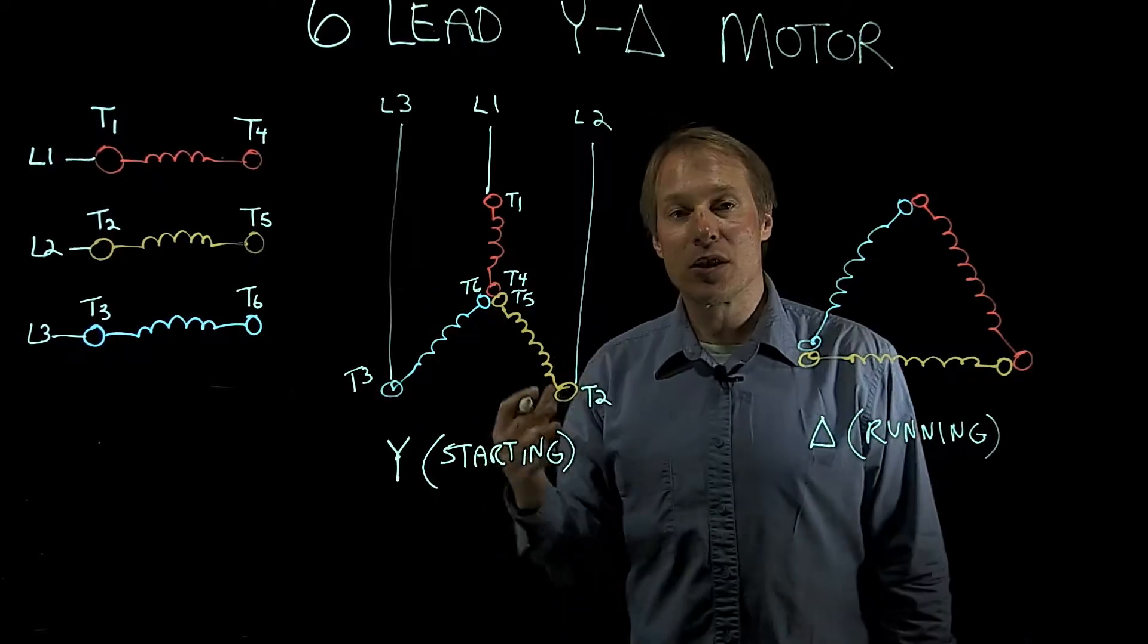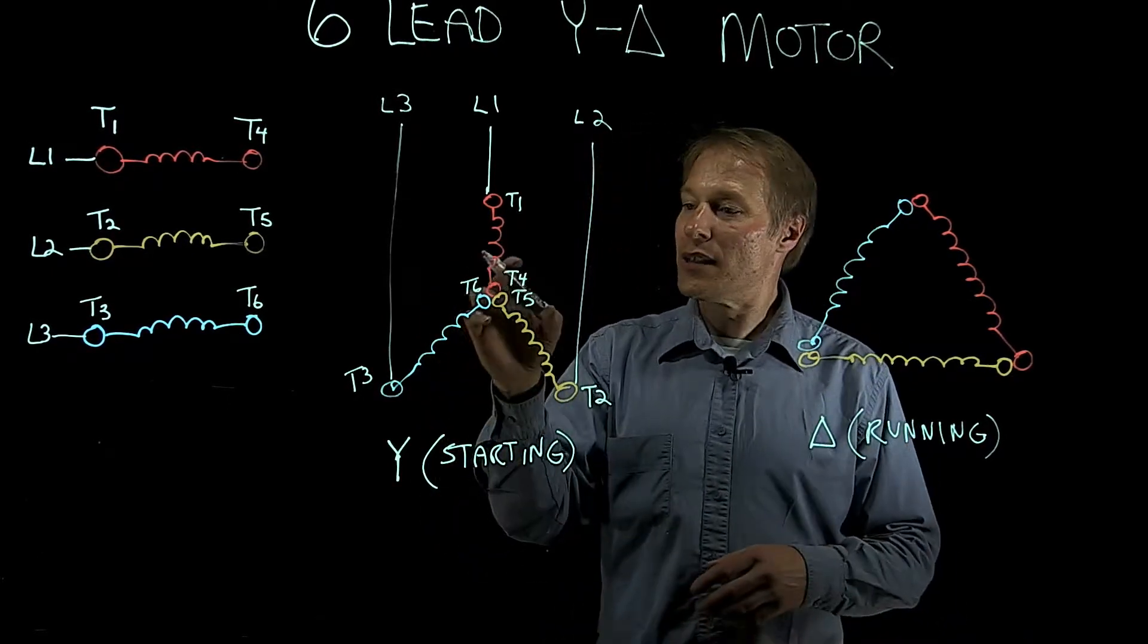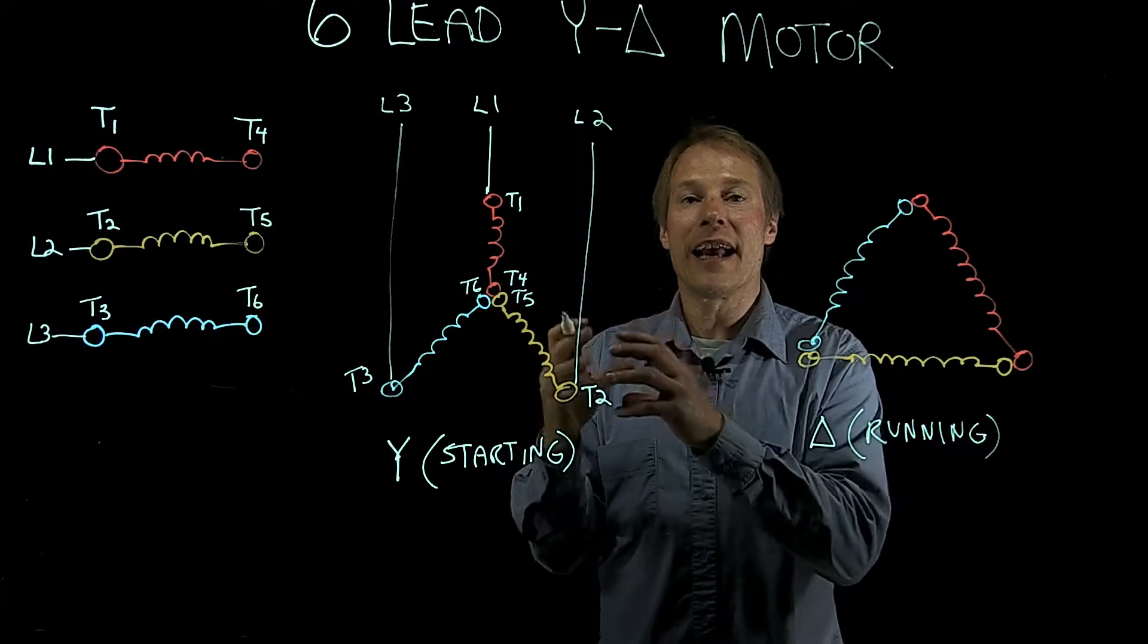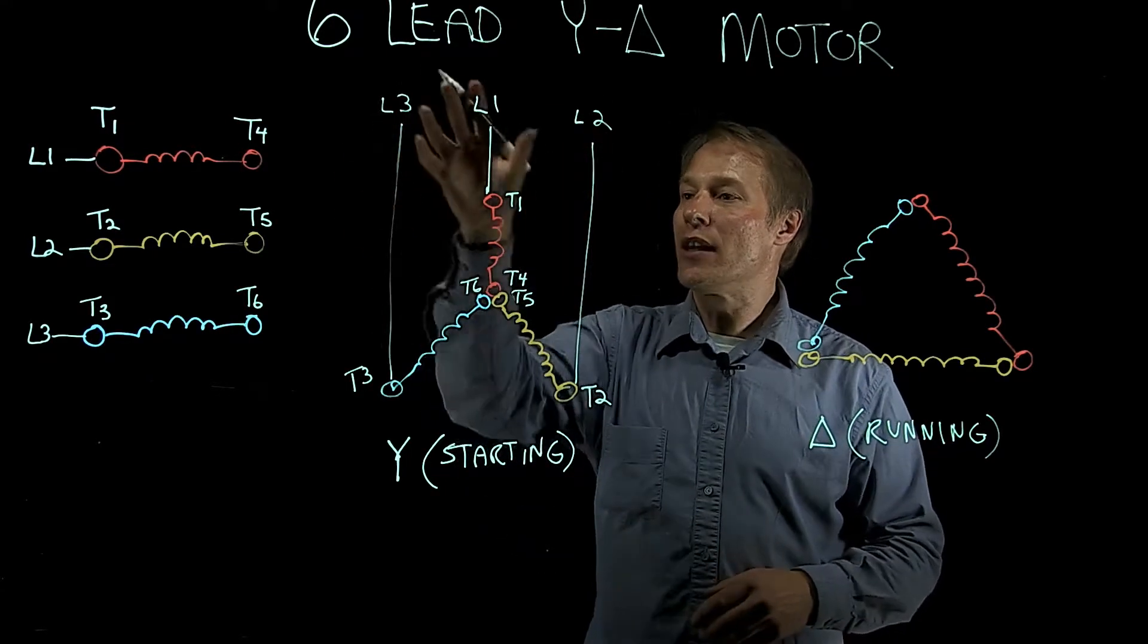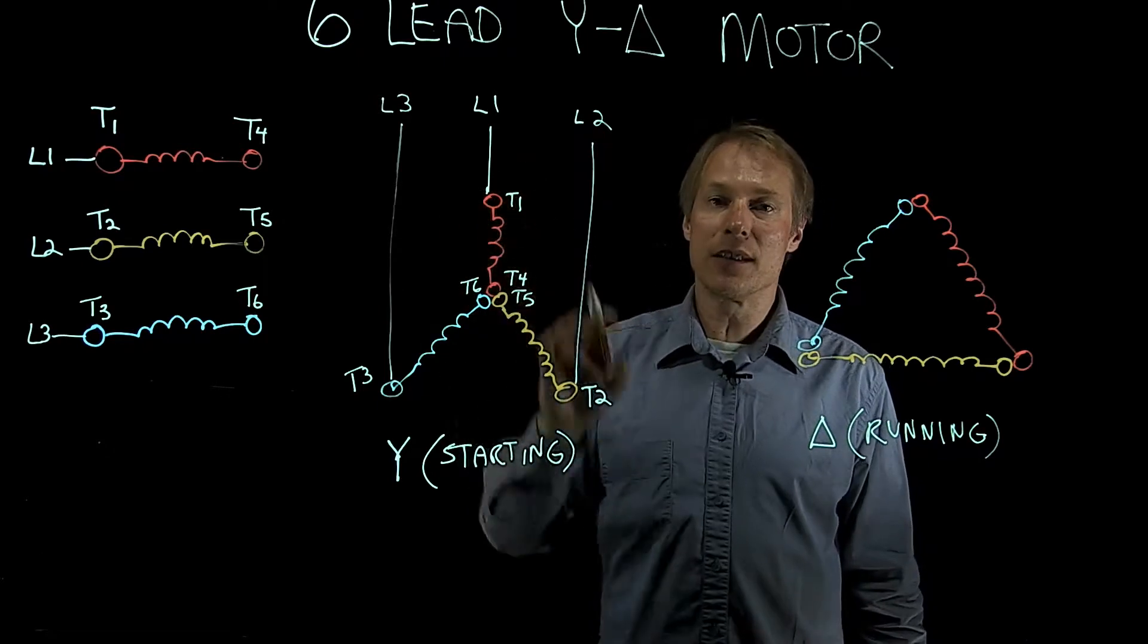So what the starter is going to do is connect T4, 5, and 6 together, and that will form your Y point, and then you can see the lines will connect to the appropriate T terminals.